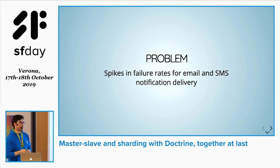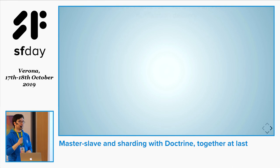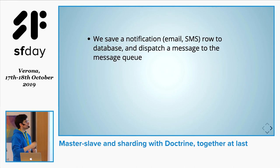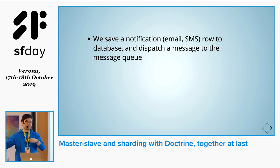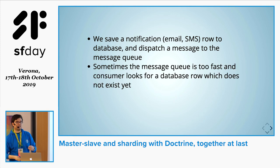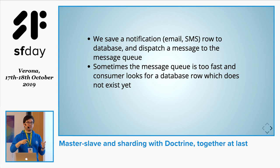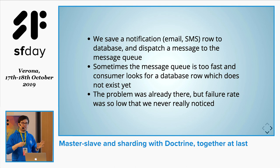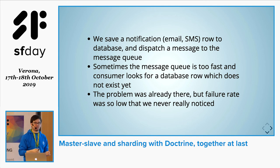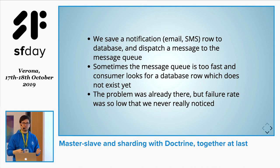Another problem — also a result of replication lag — was spikes in failure rates for email and SMS delivery. We save data in the database and then dispatch a message to a queue telling it to send. The problem was the queue consumer would try to look in the database for the new data and it would not be there — either because the transaction was not completed, or because the replication delay prevented the change from reaching the slave. This issue was already present because of the architecture, just so infrequent it slipped under our radar.